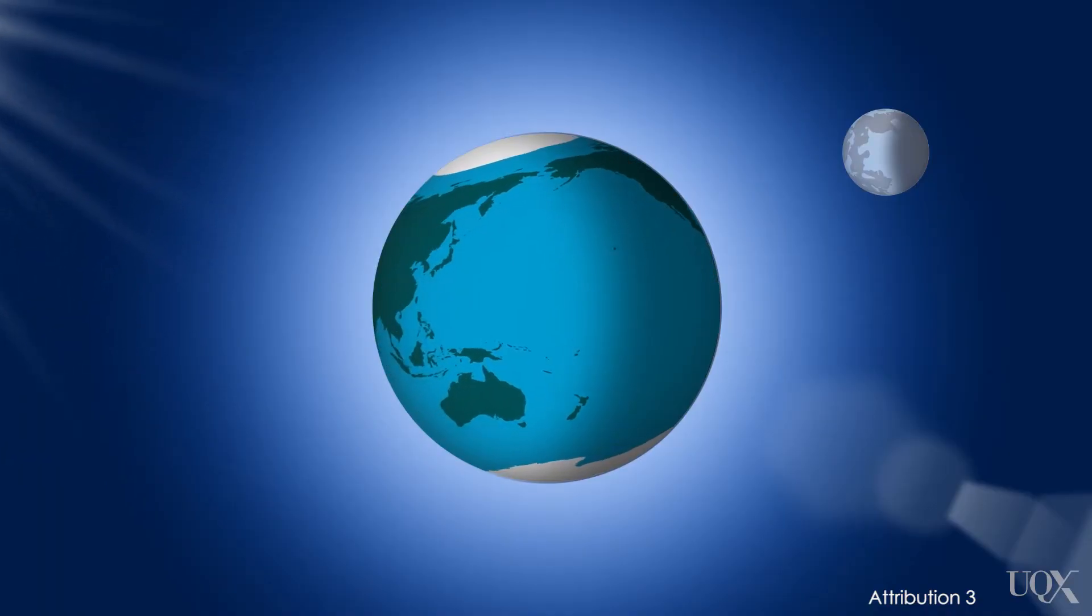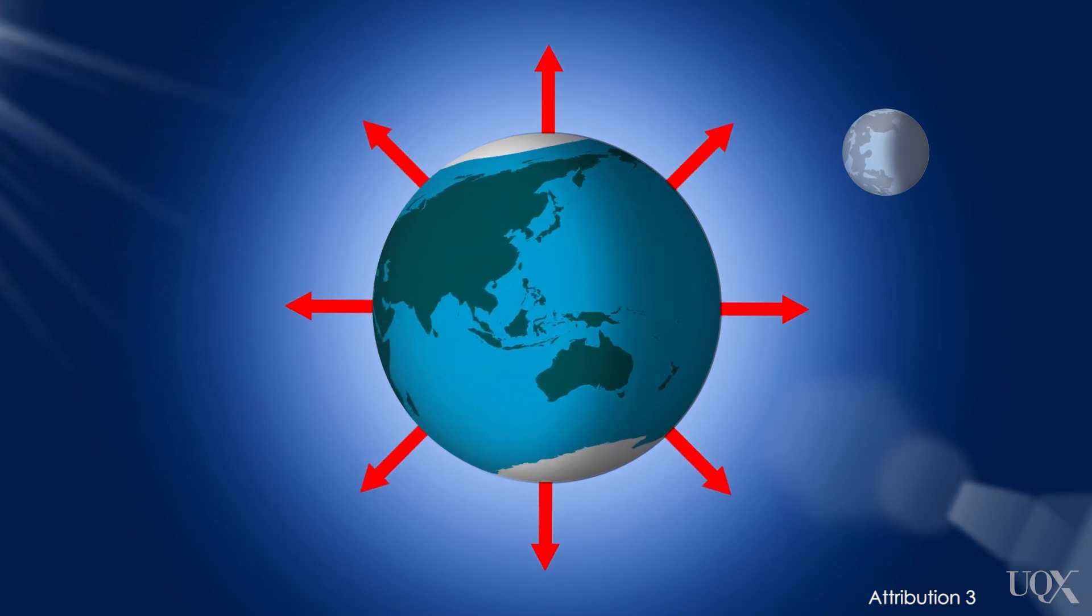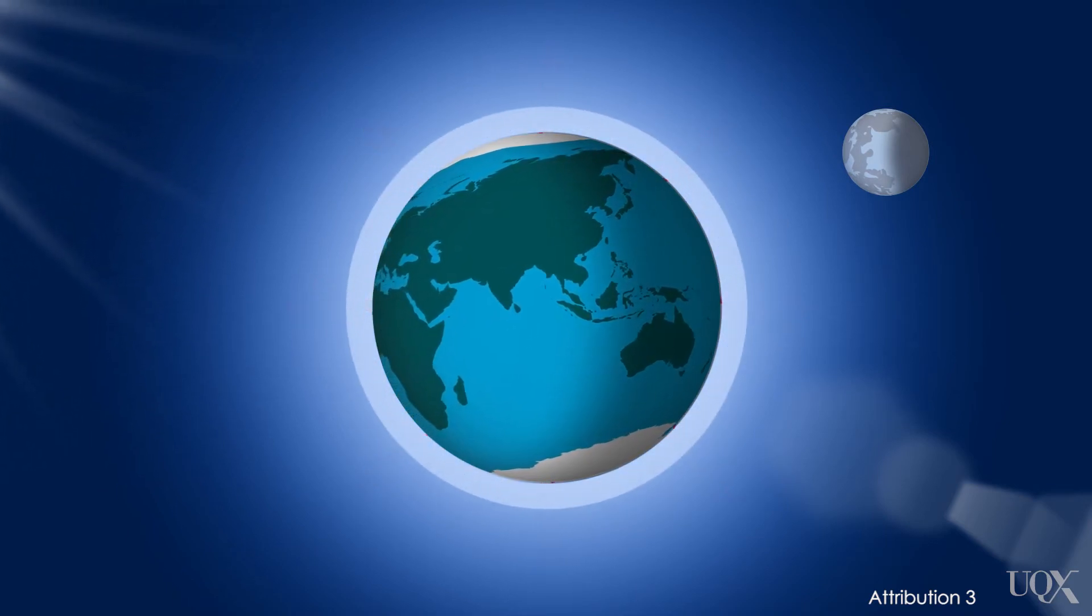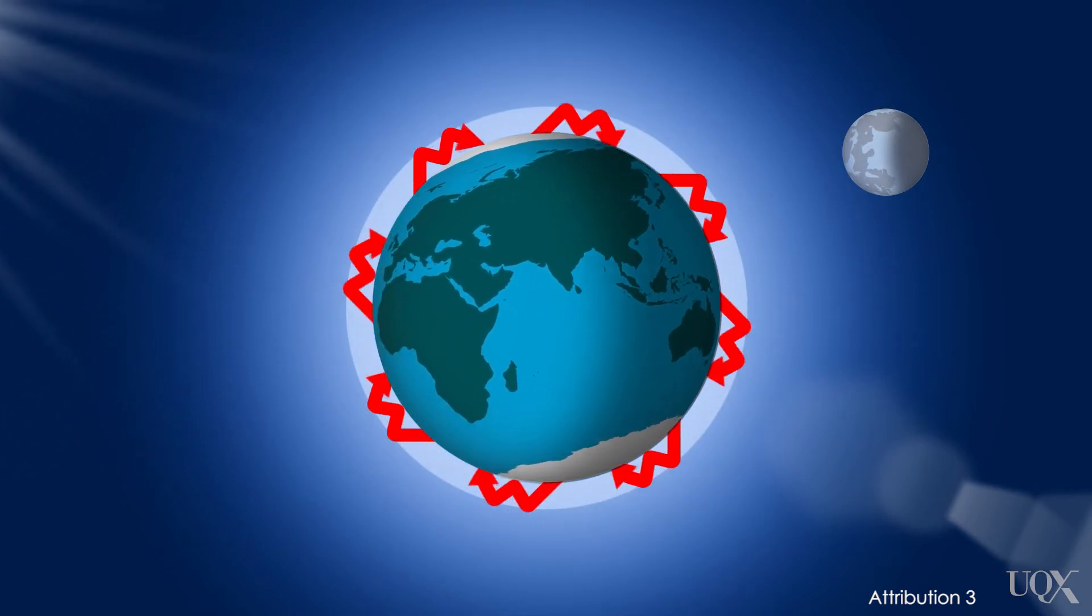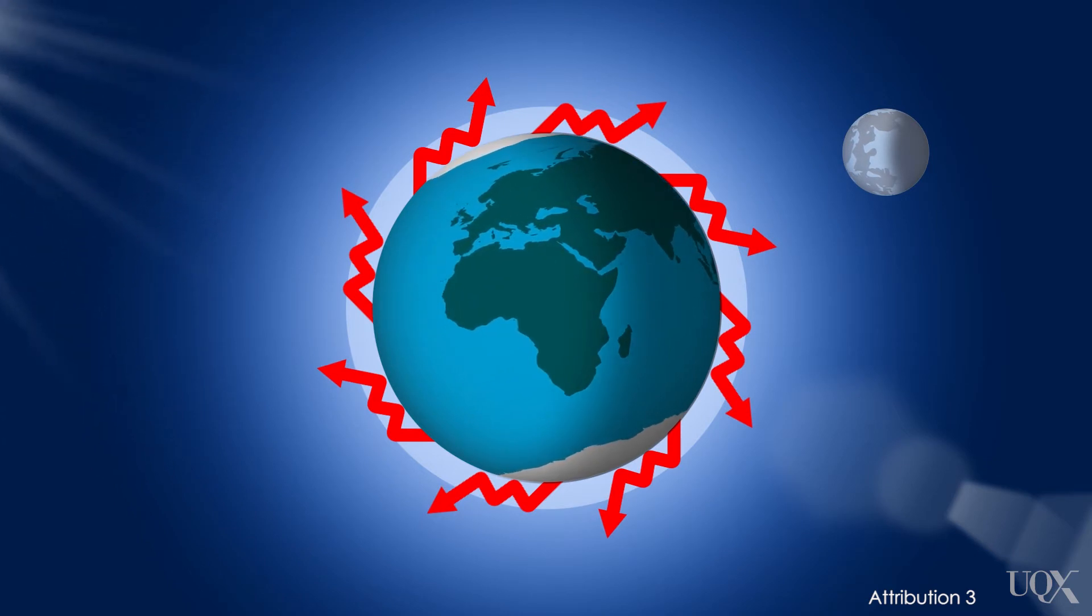He was able to make this prediction by knowing that at night and during the winter, the earth's surface cools by radiating heat out to space. Greenhouse gases trap some of this heat, slowing that nighttime and winter cooling. The sun doesn't shine all the time, but the greenhouse effect is at work 24-7.